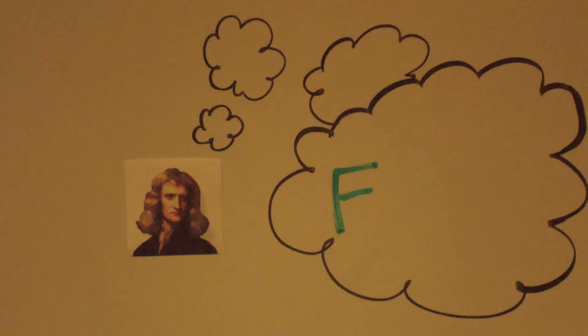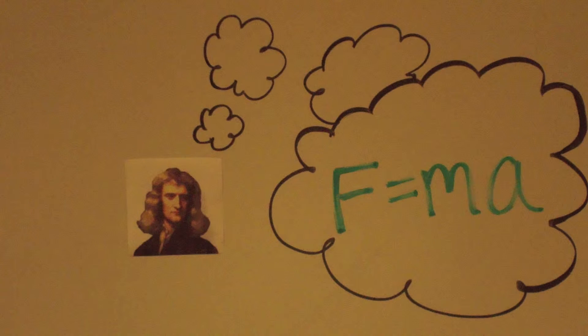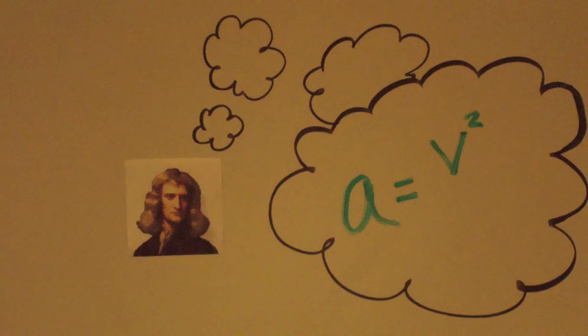Sir Isaac Newton discovered that forces are equal to an object's mass multiplied by its acceleration, and that acceleration around a circle is the velocity squared divided by the radius of the circular path.